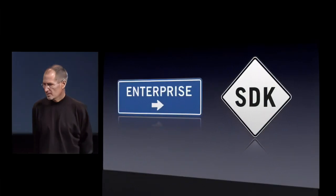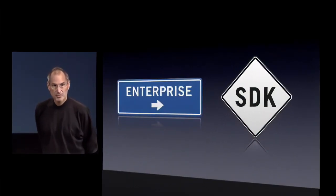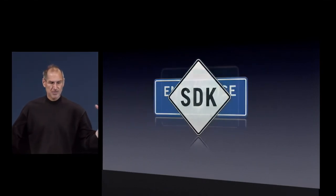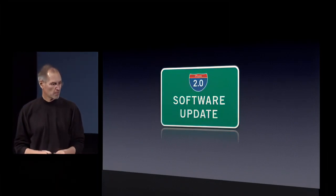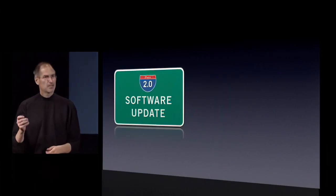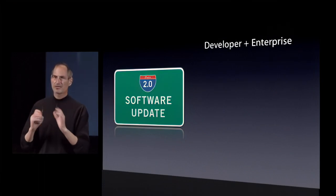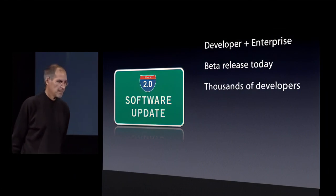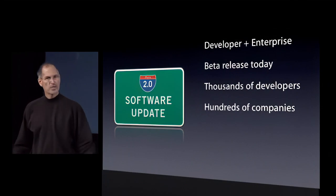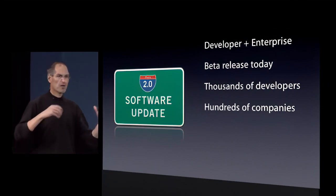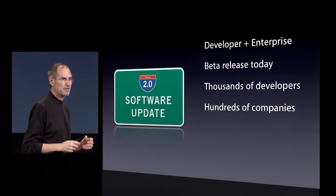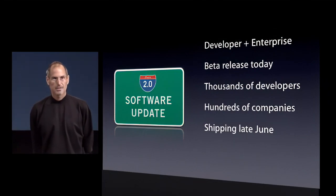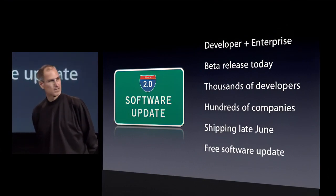We've talked about amazing new capabilities for enterprise customers and we've talked about the SDK. Both of these are going to be delivered together in one software update: the iPhone 2.0 software update. It combines the SDK plus all the new enterprise capabilities. There's a beta release going out today — it's going to be in the hands of thousands of developers and hundreds of companies. We need feedback and to work with enterprises to make sure all their Exchange configurations work great. We're going to ship this to every iPhone customer in June, and it's going to be a free software update.